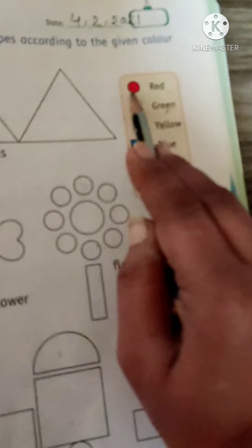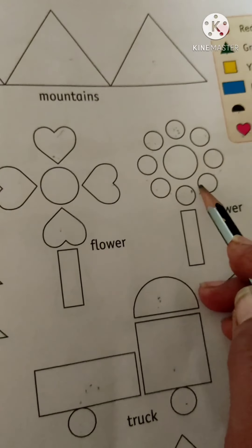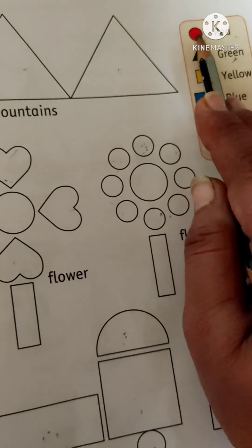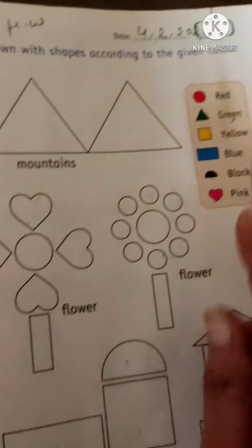See, this is circle. And which color is this? Red. These all are circles. So, red color for the circles. Fill up red color.